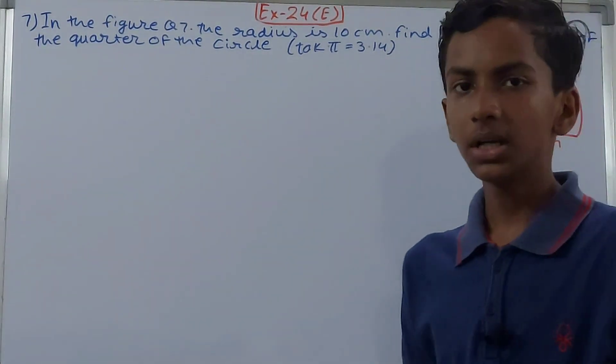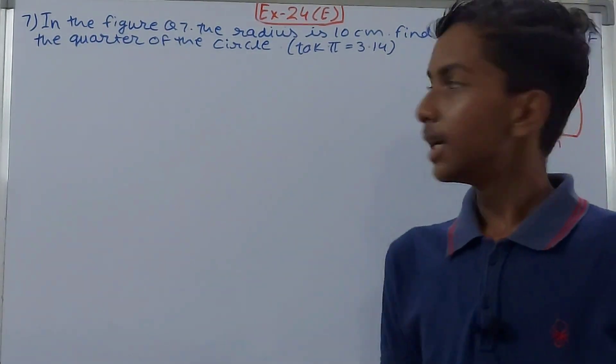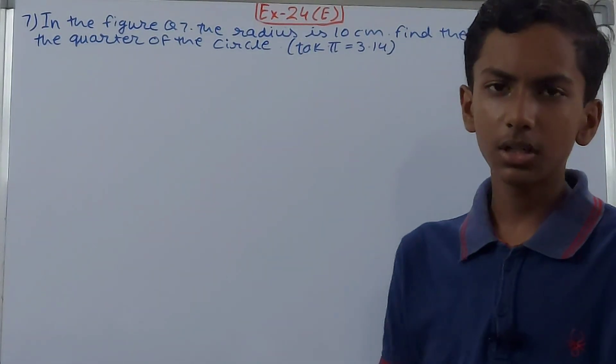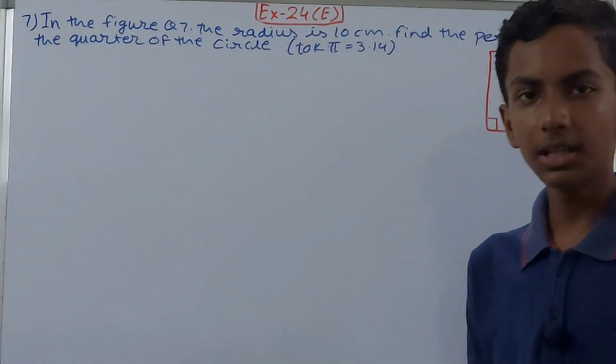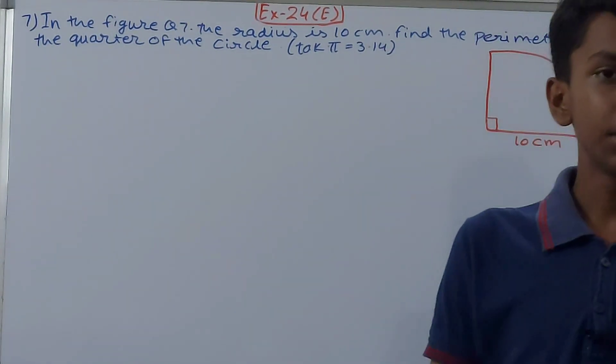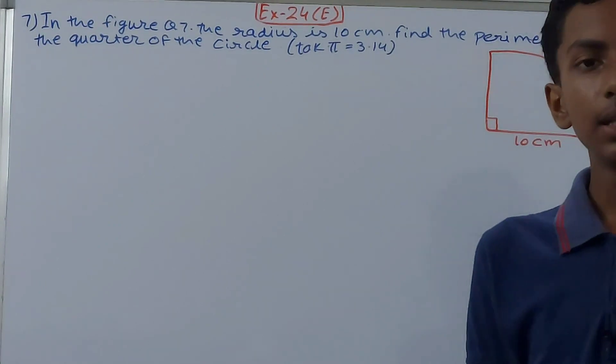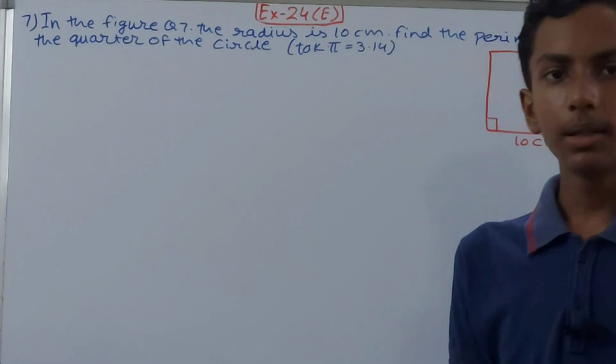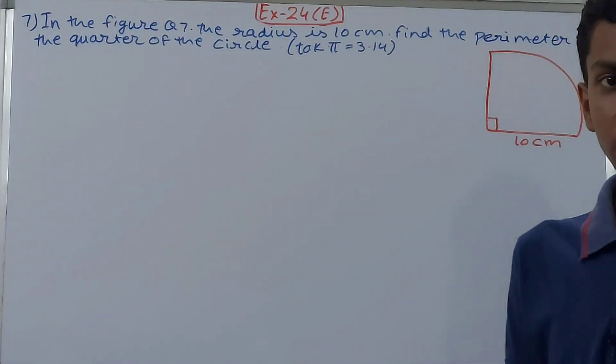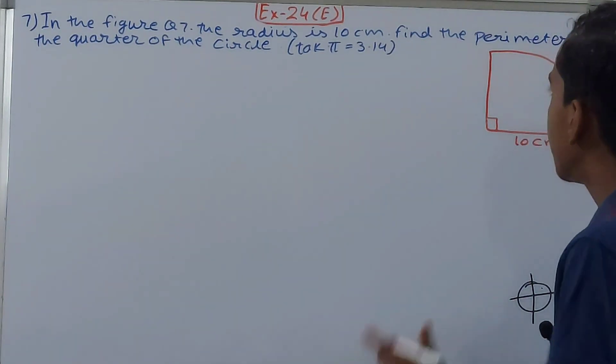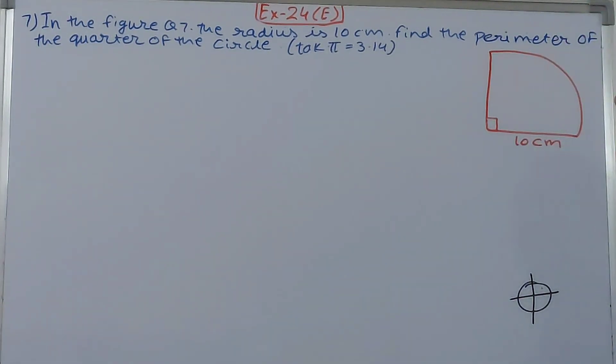See, the radius of the quadrant or basically radius of the circle, both are the same thing. So basically the radius of the circle is 10 centimeters. Now we have to find the perimeter of the quarter of the circle. Quarter that we will say quadrant, right, because it is one part, so we call that quadrant.